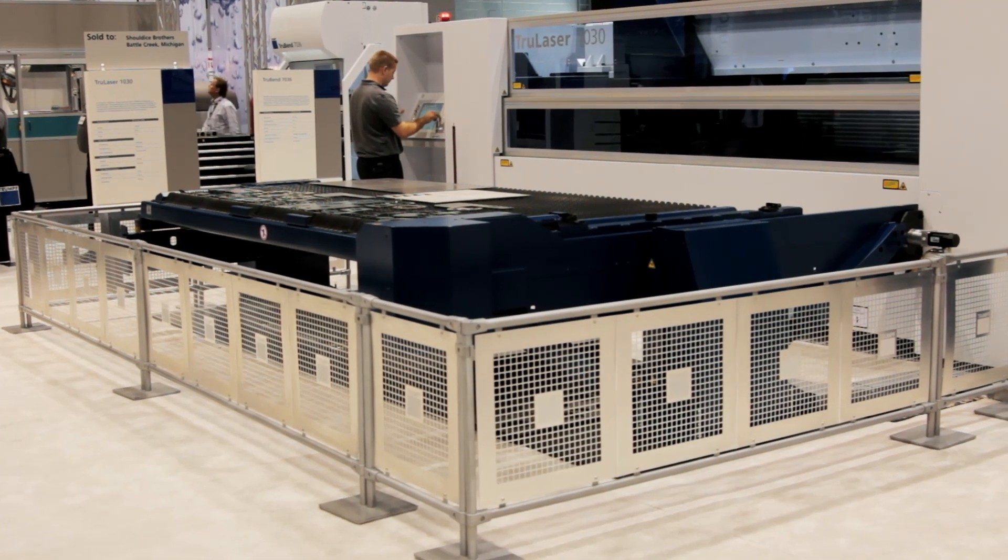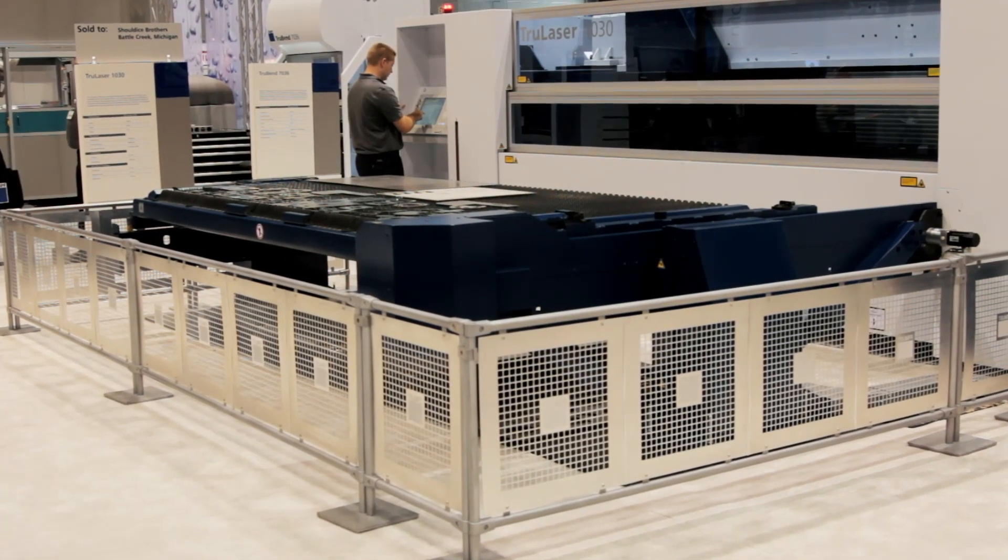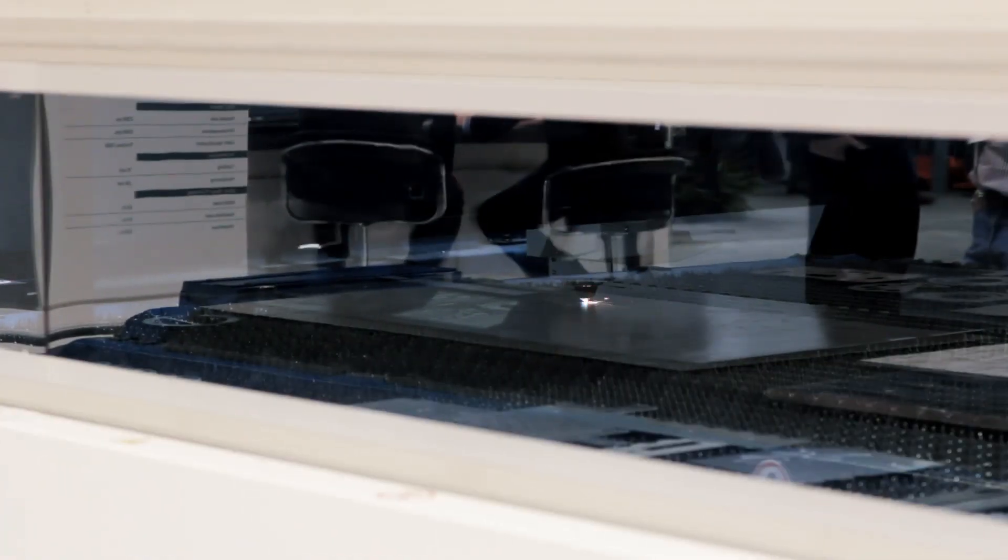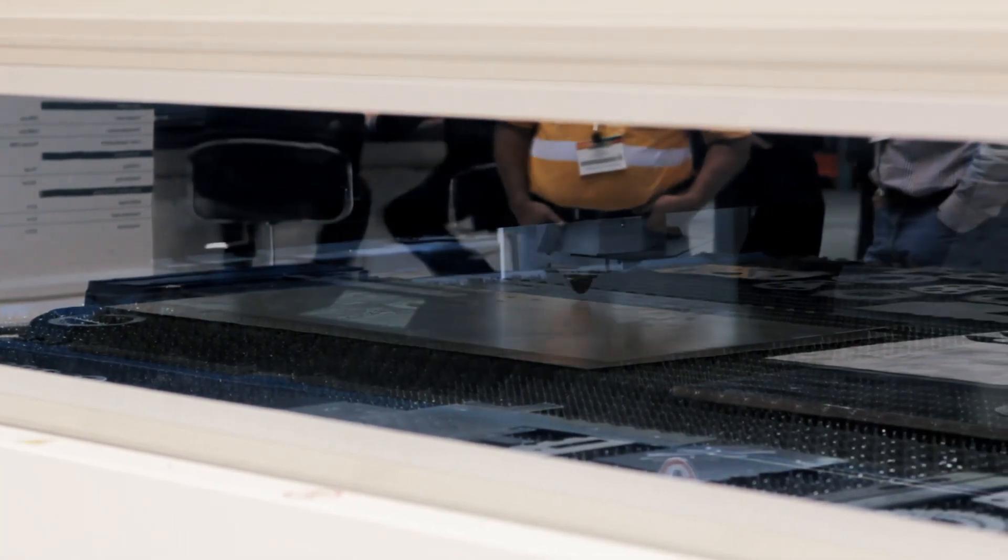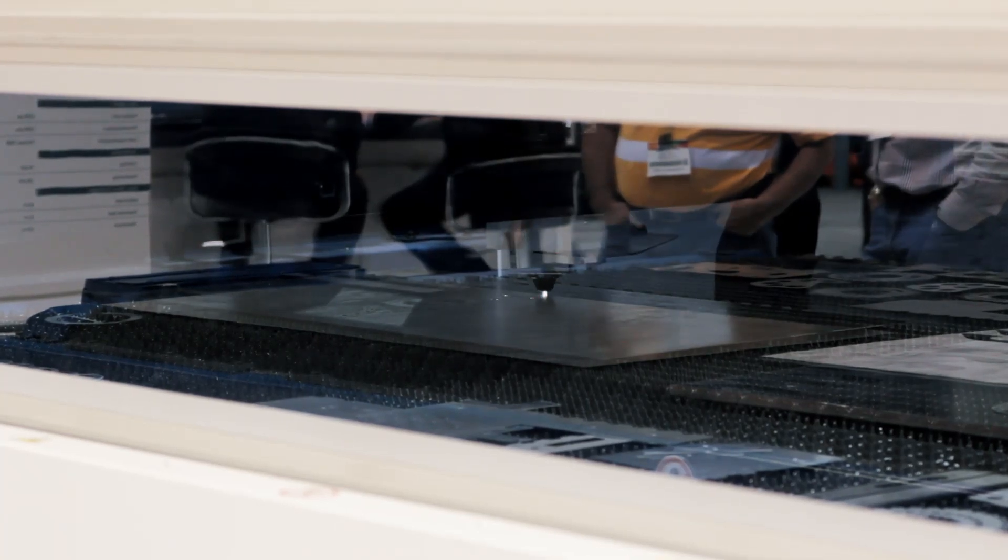Right behind me at the IMTS Trade Show, we're displaying two of our machines with B&R control hardware: the TruLaser 1030 with 2500 watts of laser power, and the TruBend 7036 electric drive press brake. Both machines are geared towards ease of use, intuitive operation, and productivity.